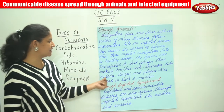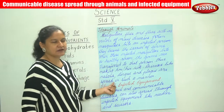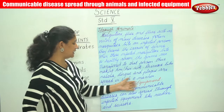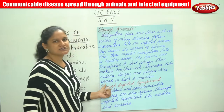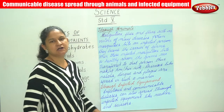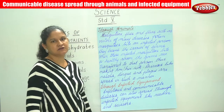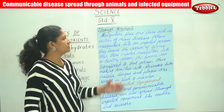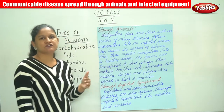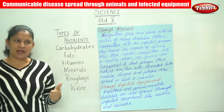Diseases like malaria, dengue, and plague are spread in such a manner through animal vectors.